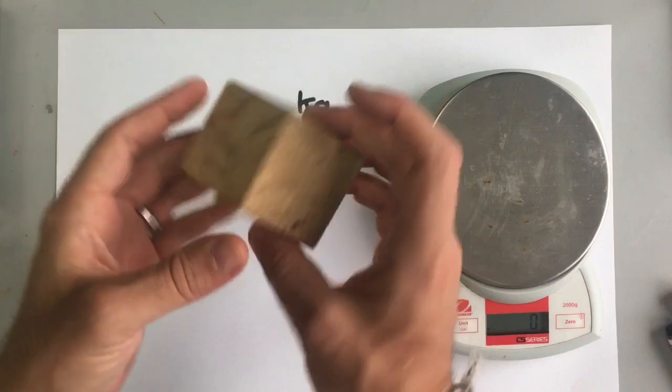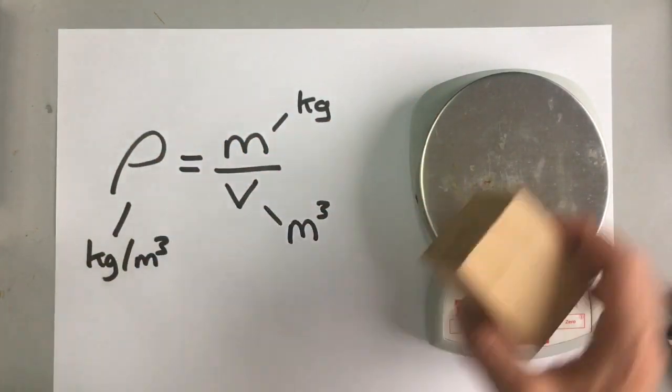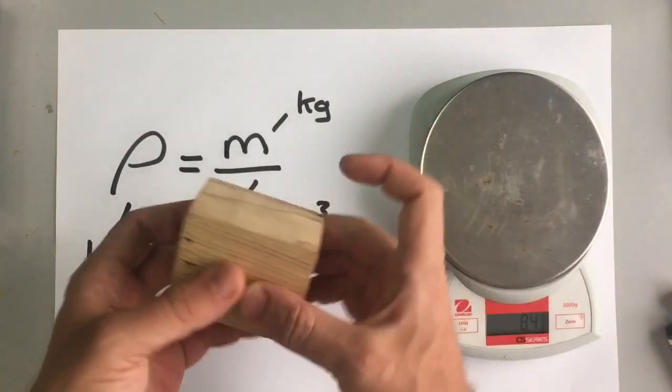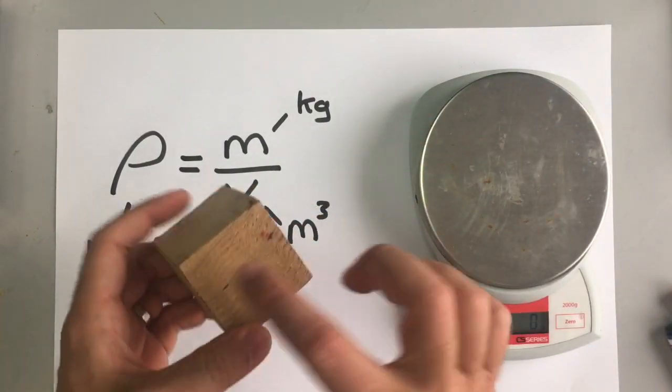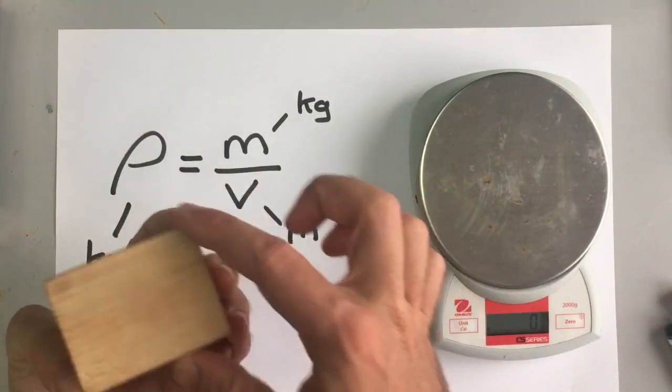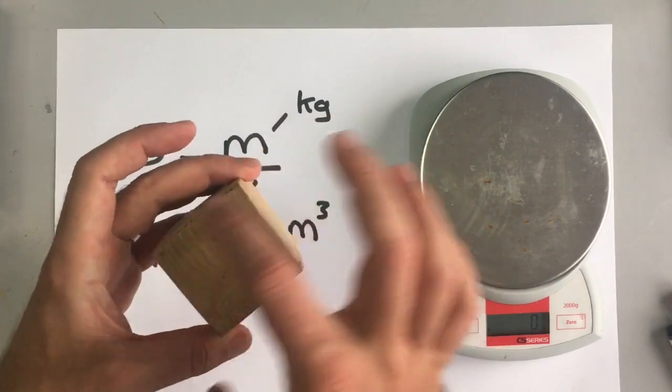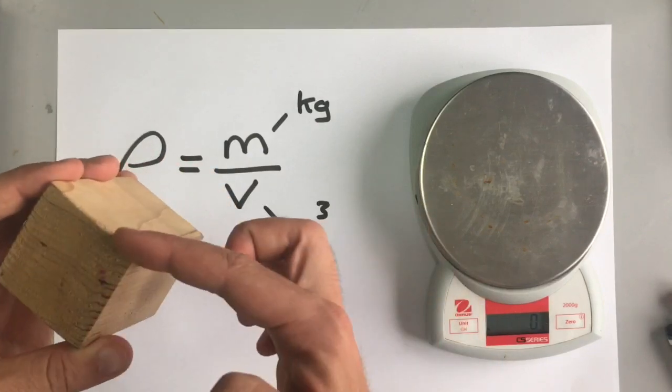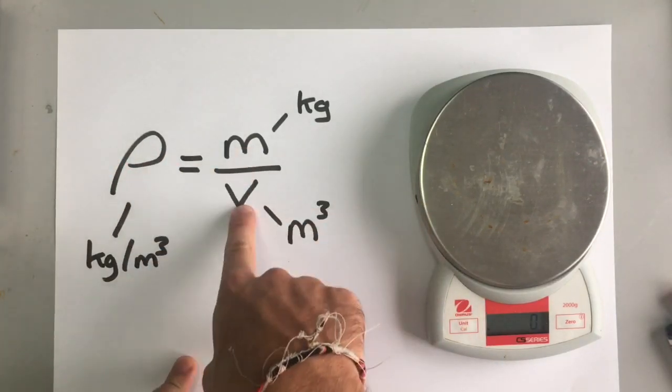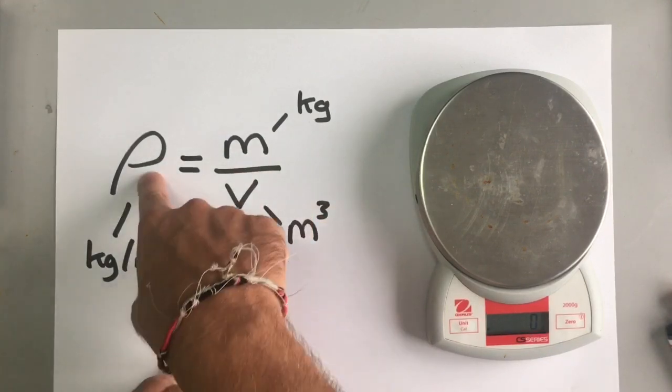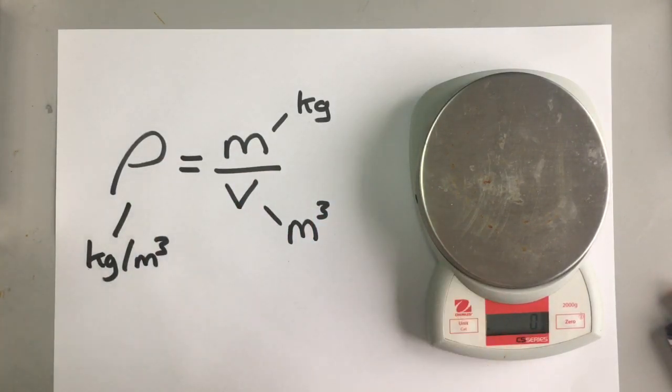So if we want to work that out for a relatively simple shape like this block, we could find the mass, 93 grams. And then we could measure the block. We could measure it here and here and here. And we could calculate the volume of the block quite easily. The width times the depth times the height. And then we could use that volume that we work out. We could do mass divided by volume and work out the density. Quite simple.